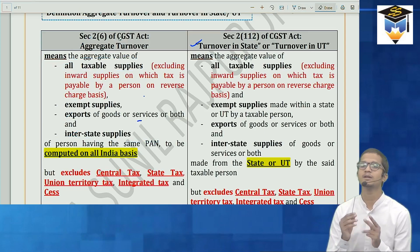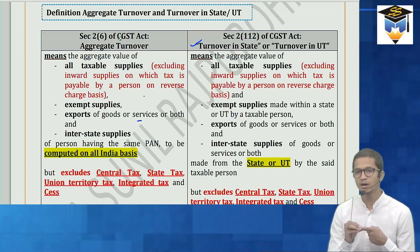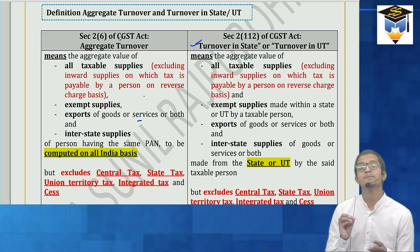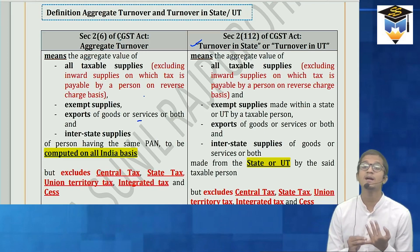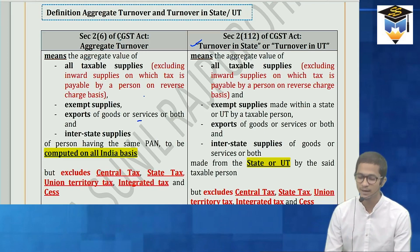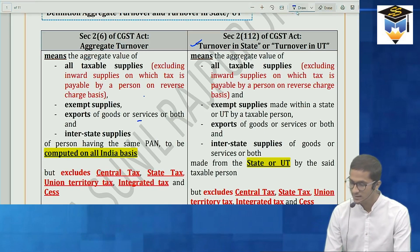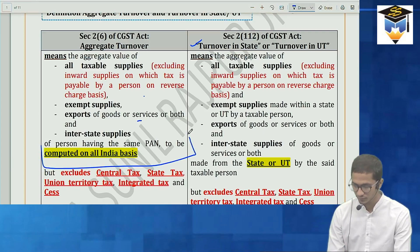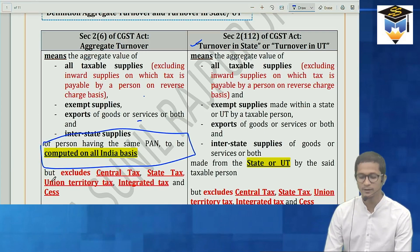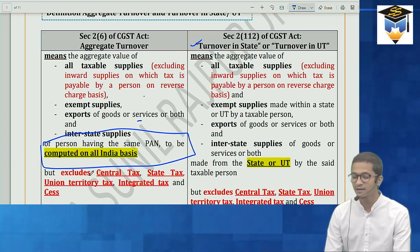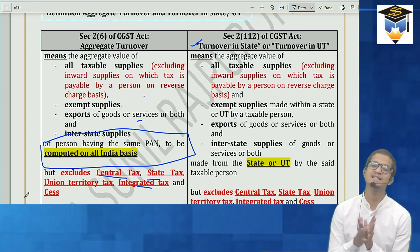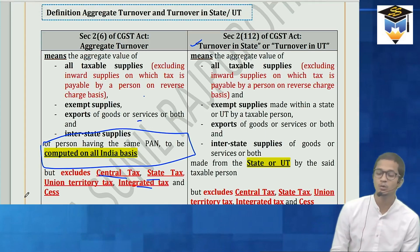So aggregate turnover includes: aggregate value of all taxable supplies, exempt supplies, exports, and interstate supply. What it does NOT include: central tax, state tax, union territory tax, integrated tax, and cess — basically GST taxes are excluded from aggregate turnover.